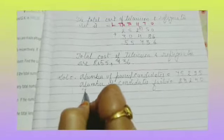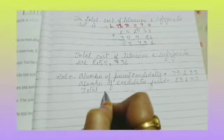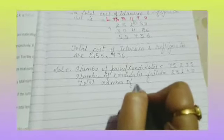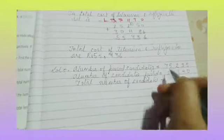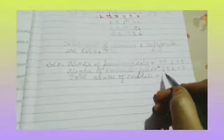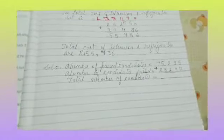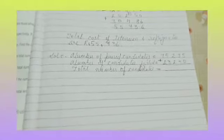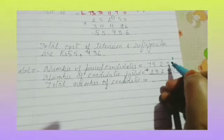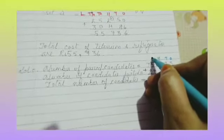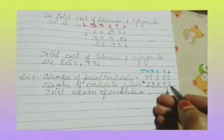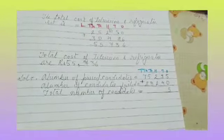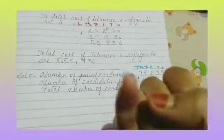So we need to add. We place the digits in columns: ones, tens, hundreds, thousands and ten-thousands. Now, 5 plus 0 is 5. Then 9 plus 4: counting up gives us 13. So write 3 and carry 1.